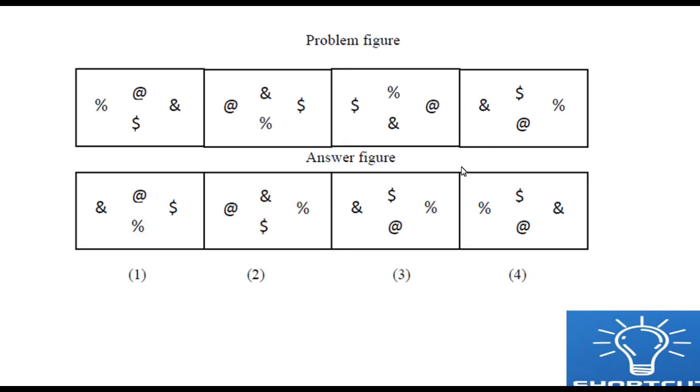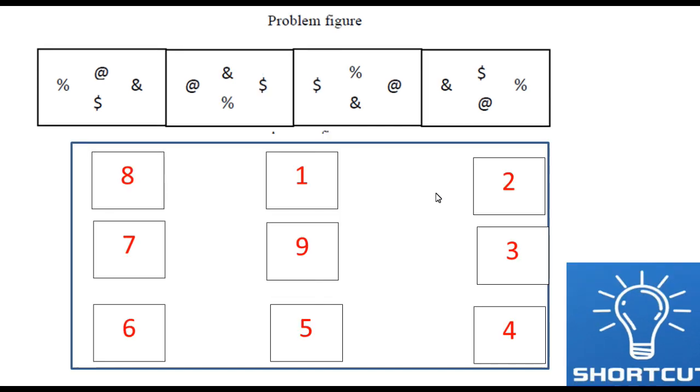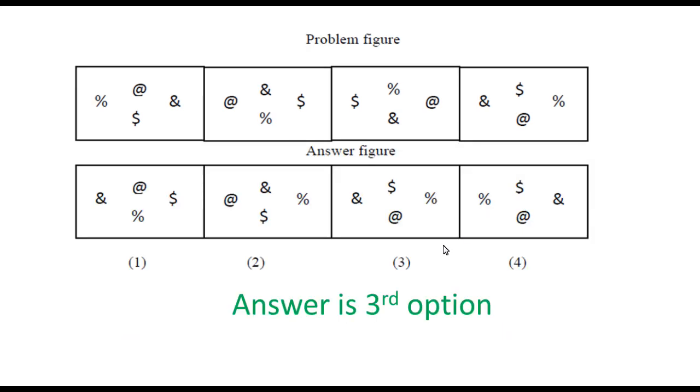So again the percentage will be in the same position. Just observe where the percentage is in the same position. Either 2nd or 3rd. Again we will come to a conclusion either 2nd or 3rd. The same way if you do with some other logic. We will just observe some symbols like this: at the rate of and ampersand like that. If you observe the same way I said you will finally conclude the answer. 3rd option is the answer. Why? Because everything it will be same as this because here 4 movement means the same, 4 movement means the same figure will be coming here.